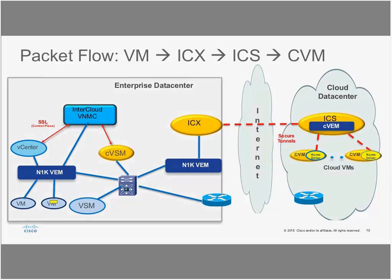A quick overview of the packet flow: a VM on a regular Nexus 1000V or vSwitch wants to talk with a VM it believes is on the same Layer 2 domain but is actually on the cloud. The N1K switching table routes traffic to a VEM module — which is actually the ICX. The ICX injects drivers, secures the traffic, and sends it across the cloud to the ICS, which then delivers it to the correct VM. This is how end-to-end traffic is handled in the ICF architecture.